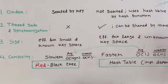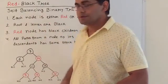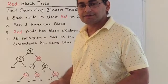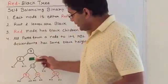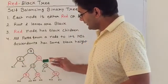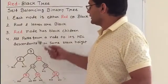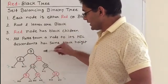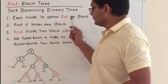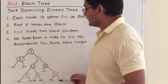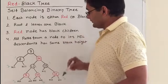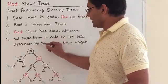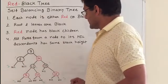The map is internally implemented as a red-black tree, which is a self-balancing binary tree. This data structure holds all the properties of a binary tree plus a few extra properties. In a binary tree, all smaller elements are on the left side of the node and all greater elements are on the right side. Each node in the red-black tree is either red or black. Root and leaves are black. Red nodes have black children. All paths from a node to its null descendant have the same black height.